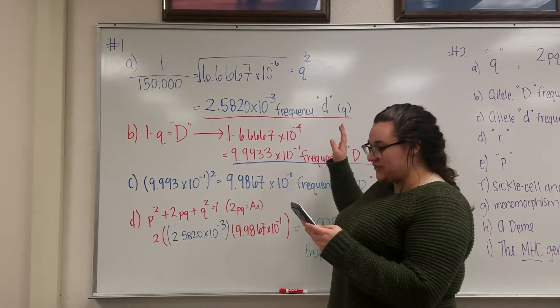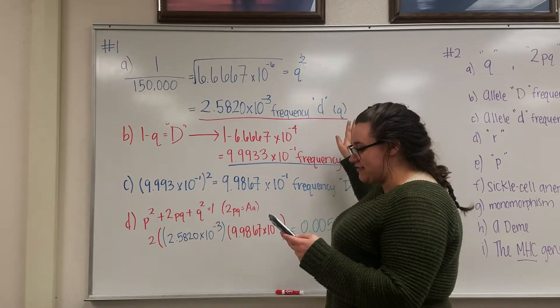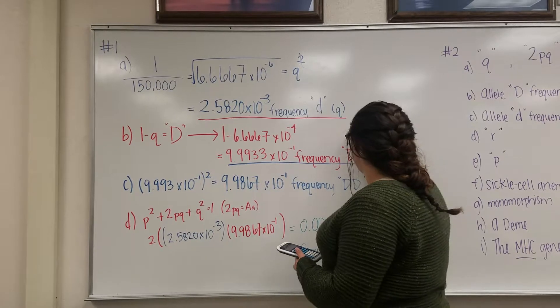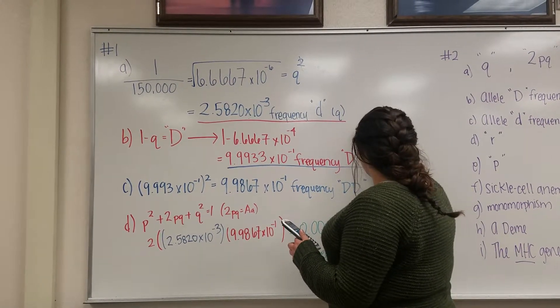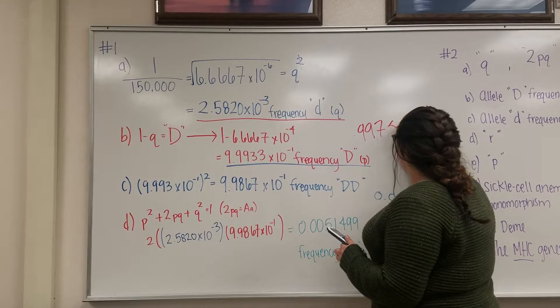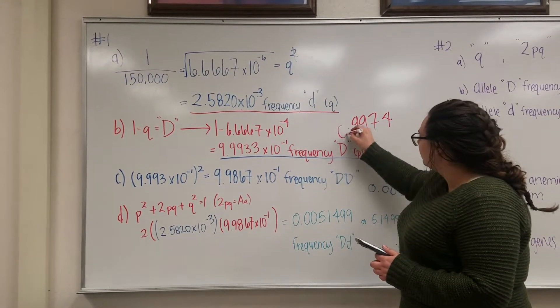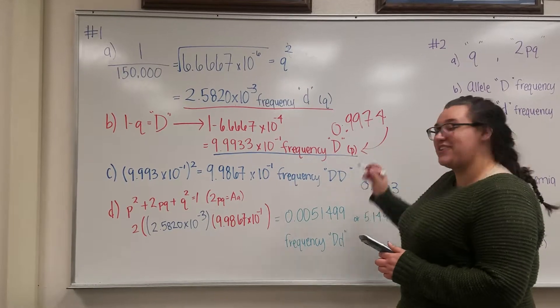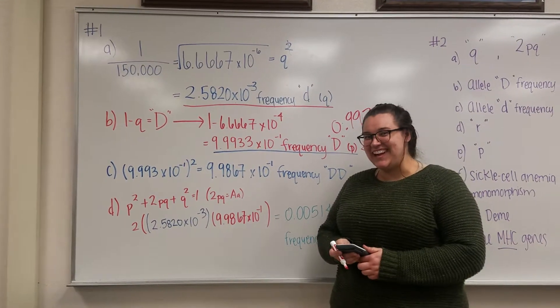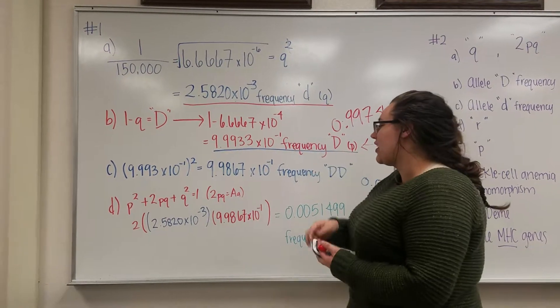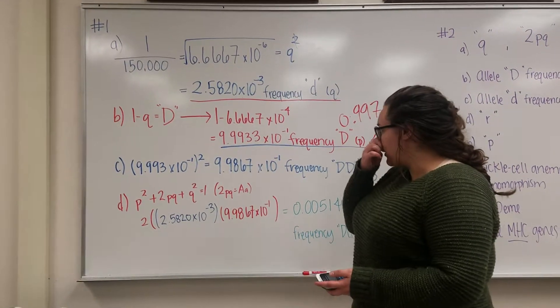Which is 0.997418. So 0.9974. That is for the frequency of the dominant D, and I'm sorry about that, because I forgot to do the square root before.